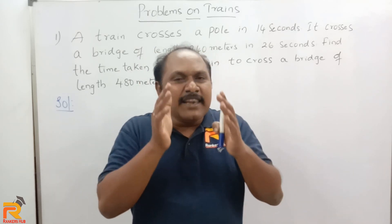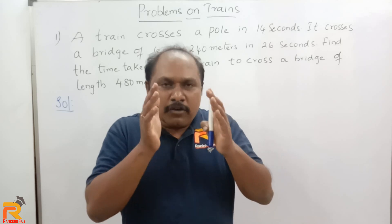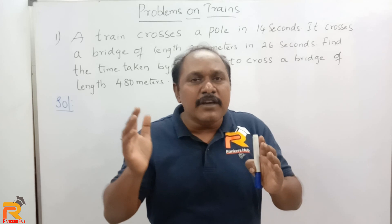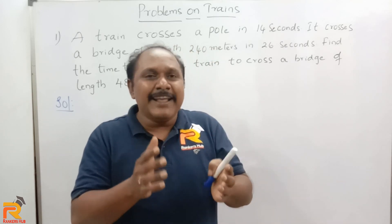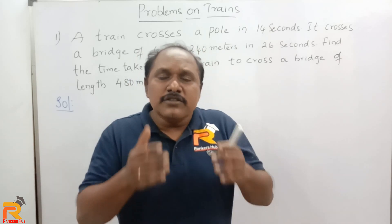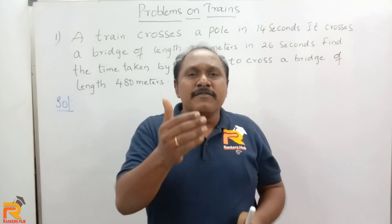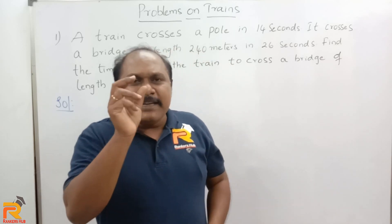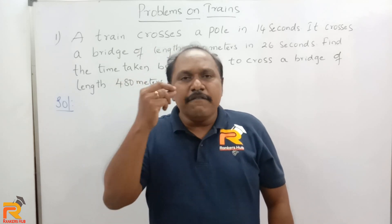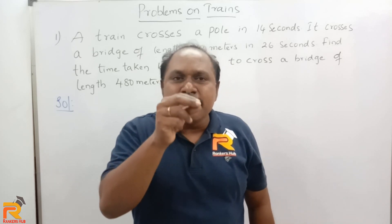To cross a pole — and this could be a pole, a man, or a tree, that is any object whose length is negligible with respect to the length of the train — the train has to travel a distance equal to the length of the train. To cross a bridge — which could be a bridge, platform, tunnel, or another train — the distance the train has to travel is the length of the bridge plus the length of the train. These are the two basic concepts to know before answering questions in this chapter.